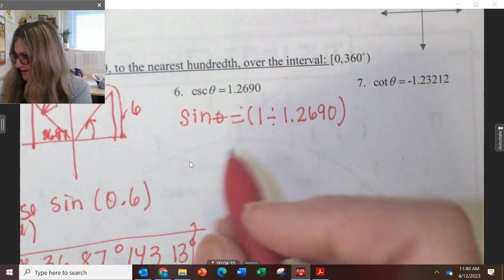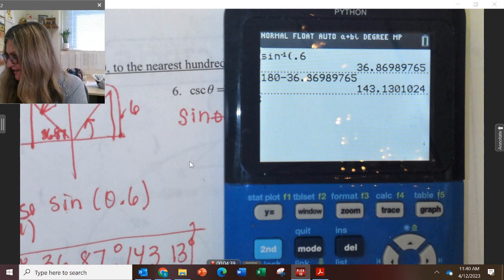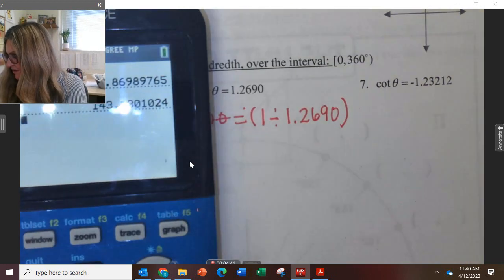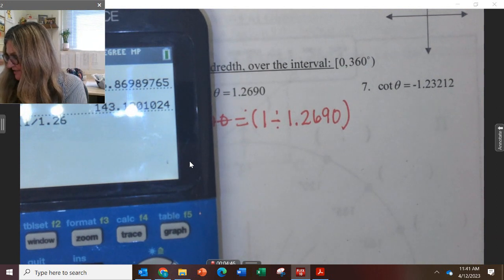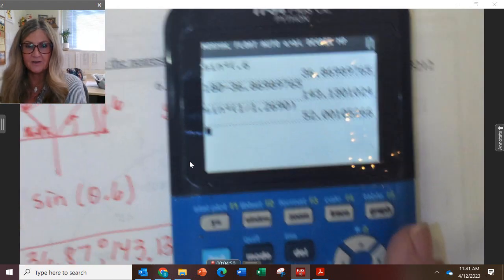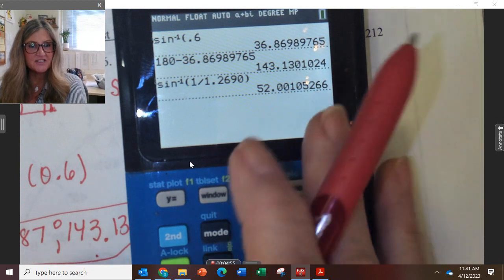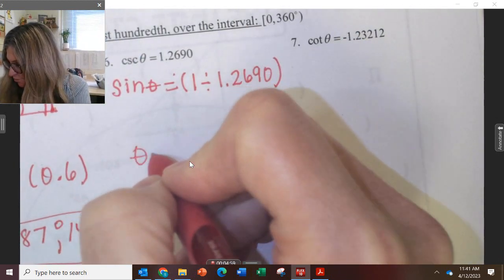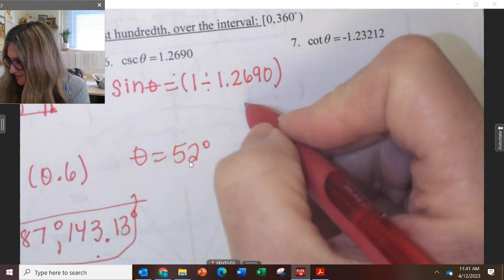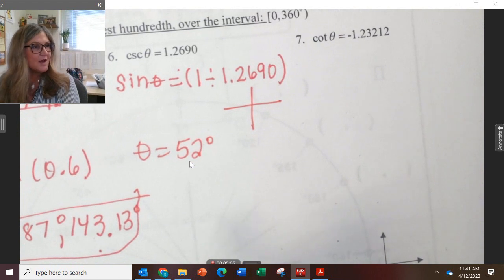I have to change that into sine by doing the reciprocal. And now to type it in, we're looking for an angle, so we put in second sine of 1 divided by 1.2690. And we get this angle. So to the nearest hundredth, it's just 52 degrees. So one of my answers is 52 degrees.